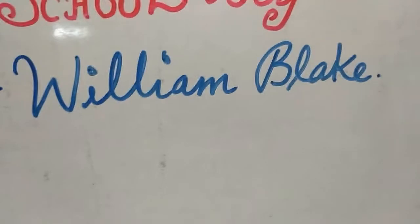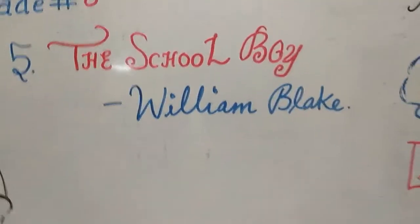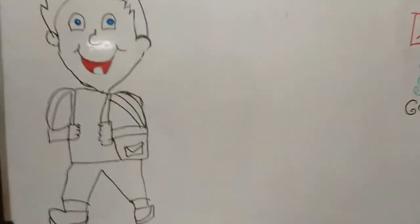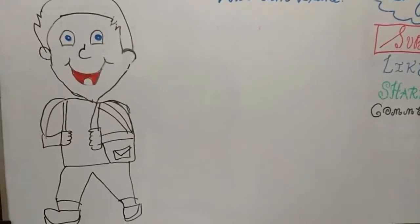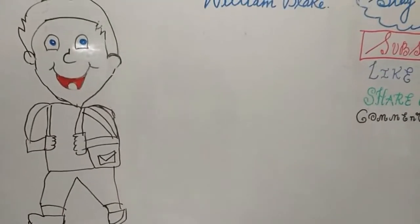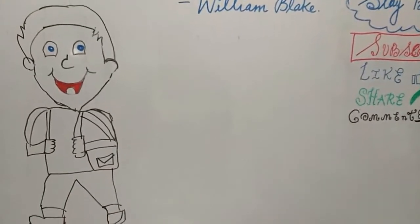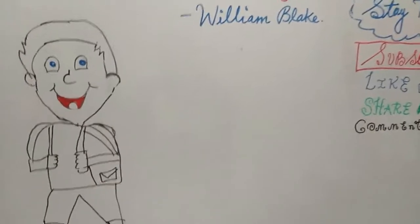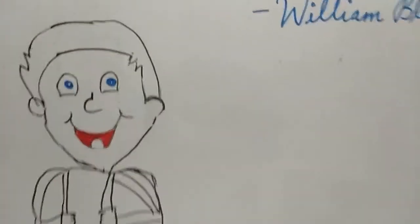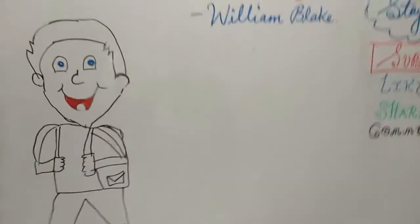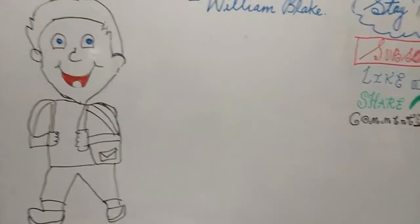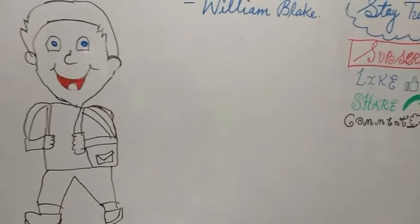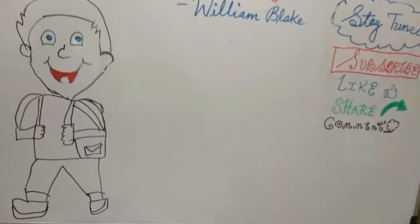The poet William Blake tells about a school boy, and according to him this particular school boy is not a happy child. We are going to see what makes him unhappy and why he compares himself to a bird put inside a cage, or even to a plant that withers — meaning it is not fresh, its leaves fall down — when it must bloom.